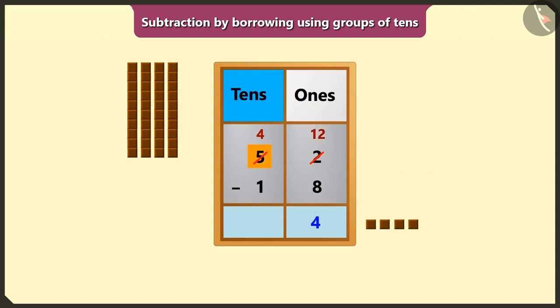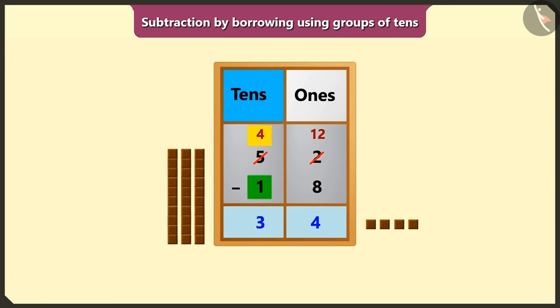Now we have to subtract the numbers of the tens place. If we subtract 1 tens from 4 tens, we will get 3 tens. So we will write 3 in the place of tens.